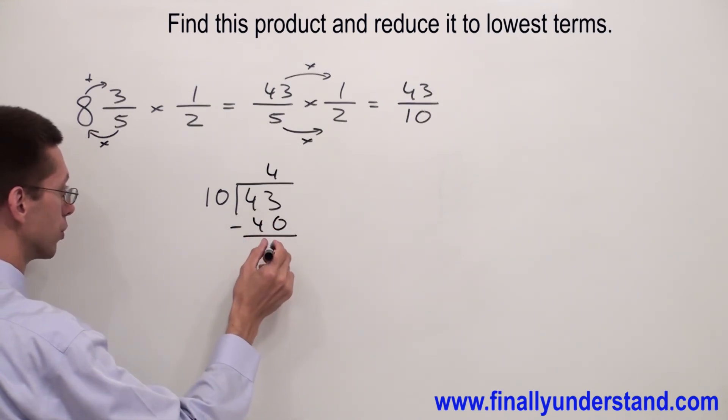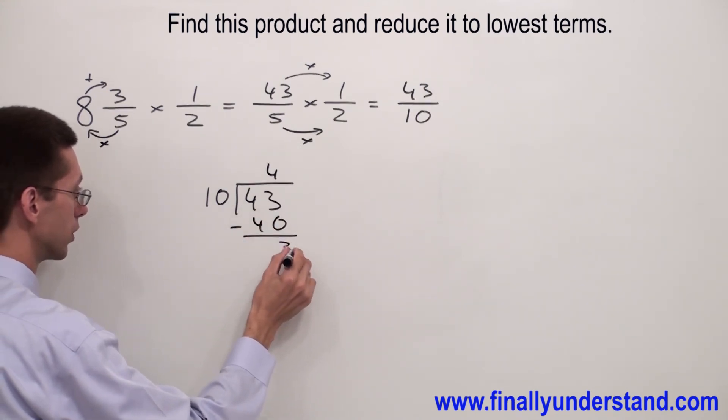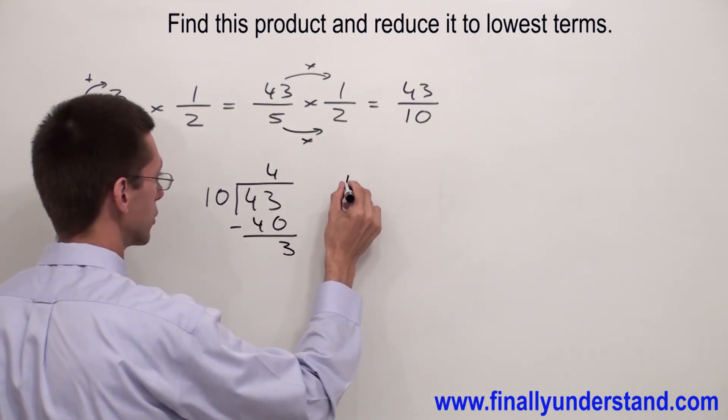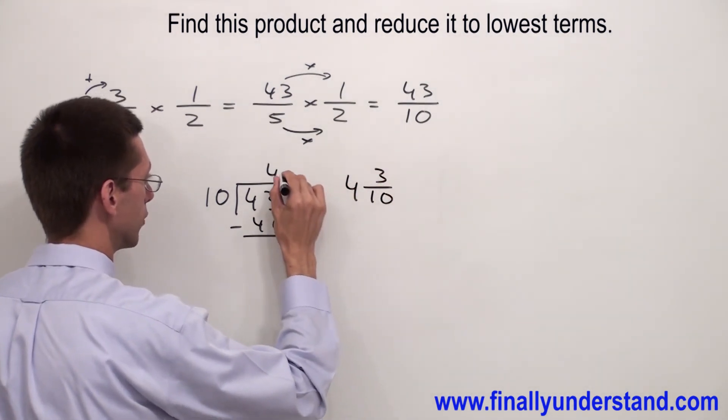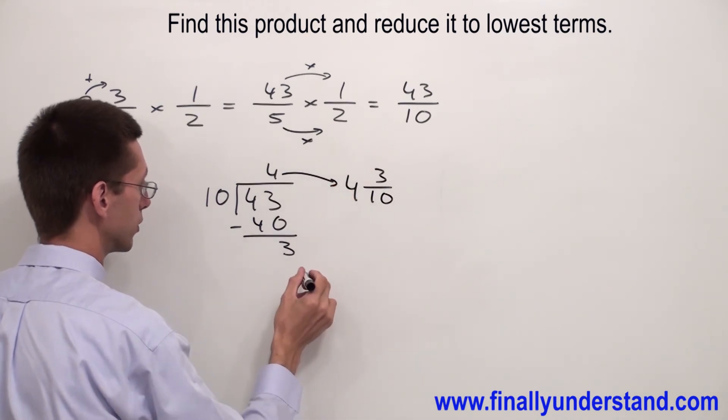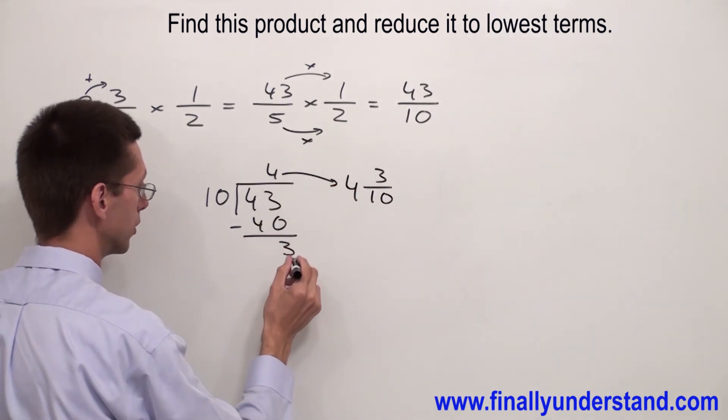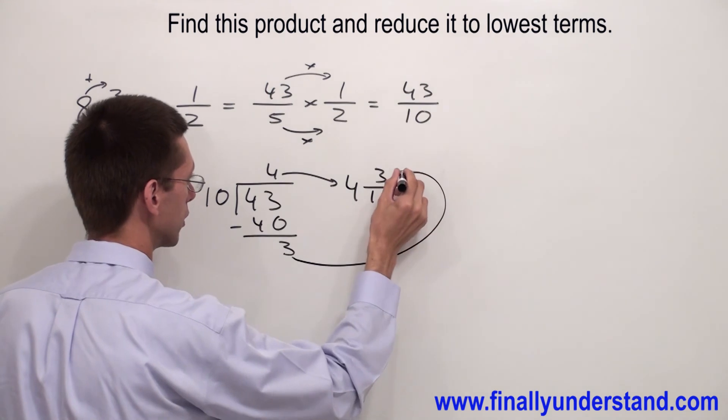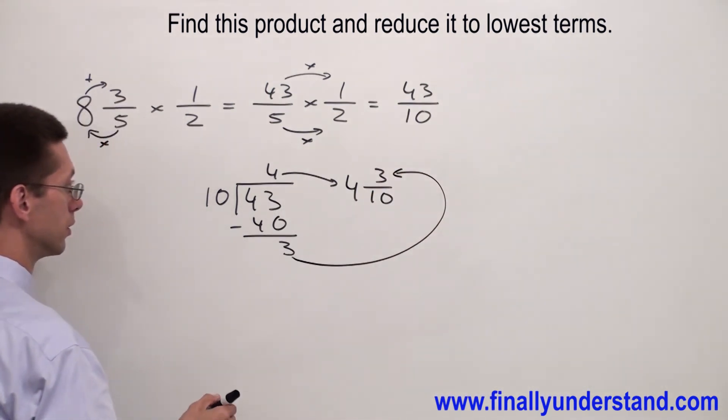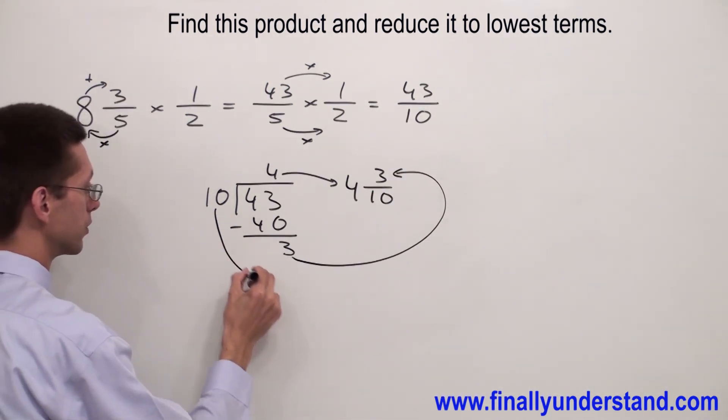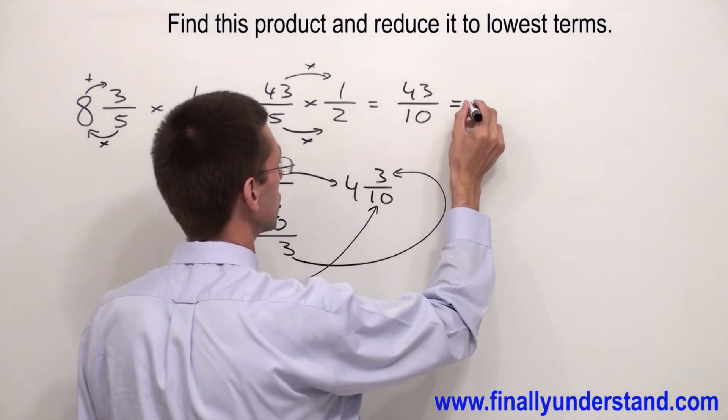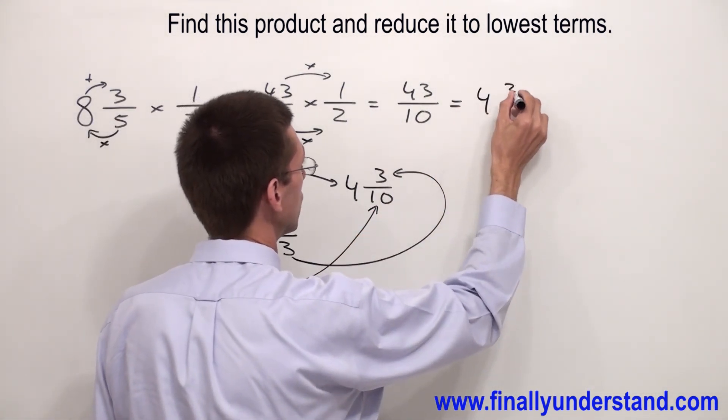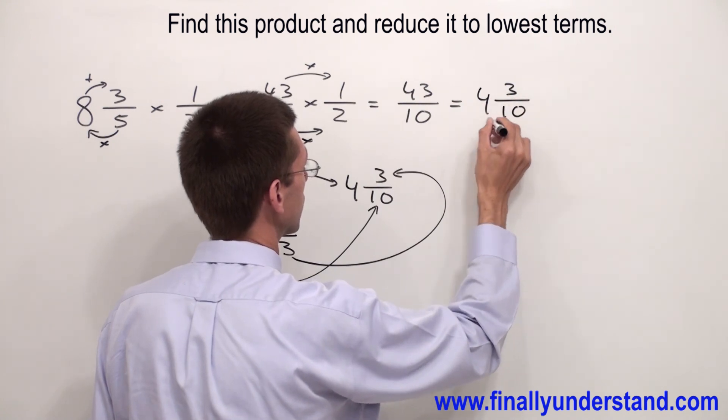43 minus 40 is 3. The quotient will go to the front. The remainder will go to the numerator, and the divisor will go to the denominator. That's why my answer is 4 and 3 over 10. This is the solution.